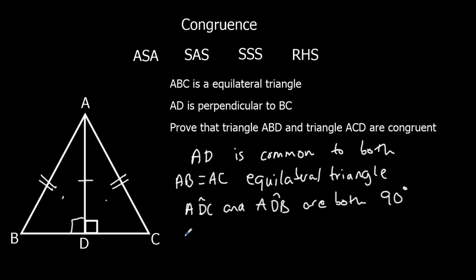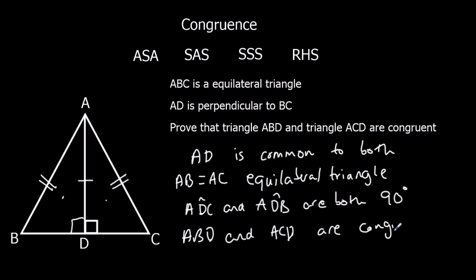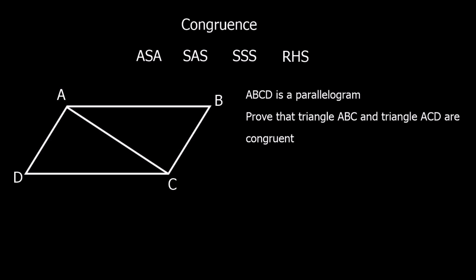Therefore, triangles ABD and ACD are congruent because of RHS — right angle, hypotenuse (AB and AC), and one other side (AD). That's the answer.